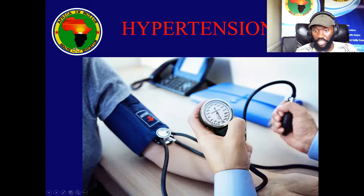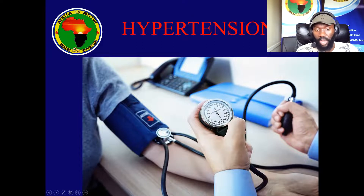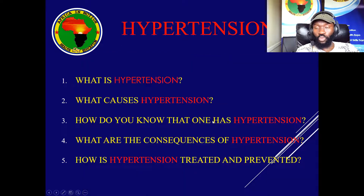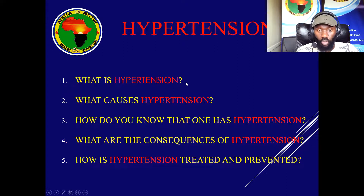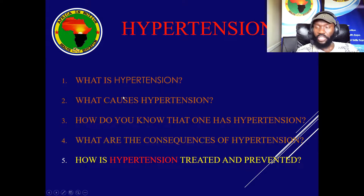We check hypertension using a machine called a sphygmomanometer — the blood pressure or tension machine — to examine how much blood pressure you have. As usual we address five questions, but today specifically we are going to look at only the first one: the definition — what is hypertension. The other topics — causes, signs and symptoms, complications, and treatment or prevention — will follow in the next presentation.